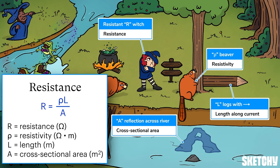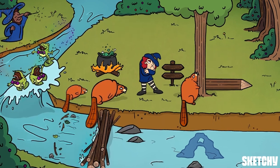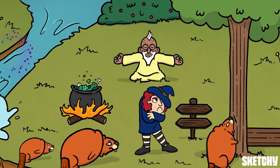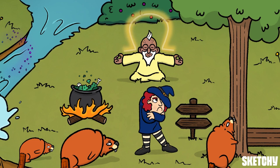The larger the cross-sectional area, the larger the number of possible paths a charge can follow, so the lower the resistance. Our sorcerer guru has chosen the path of enlightenment — as he meditates nearby the sulking witch, his mantra reminds you that the unit for resistance is the ohm, while the aura he emits is in the shape of the Greek letter omega, the symbol for the ohm.